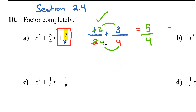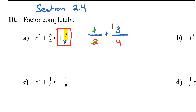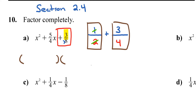So my numbers are 3/4 and 1/2. Setting up two brackets gives me (x + 1/2)(x + 3/4), and that's the answer for part a.